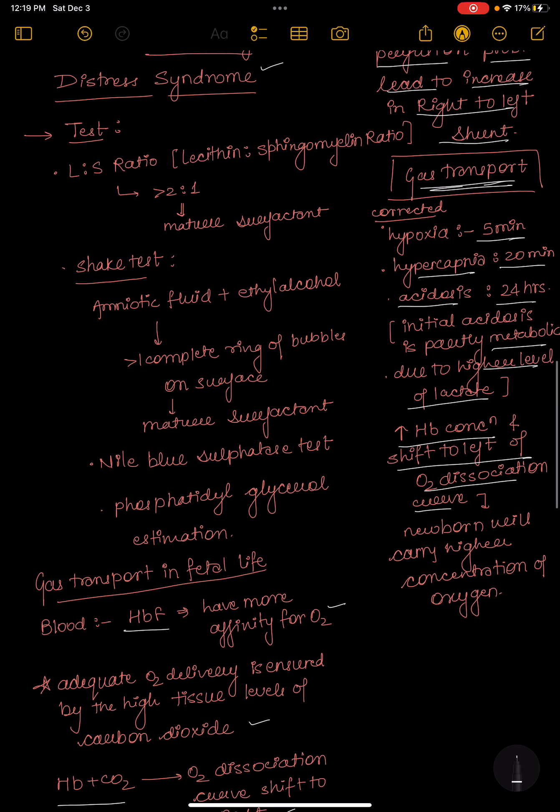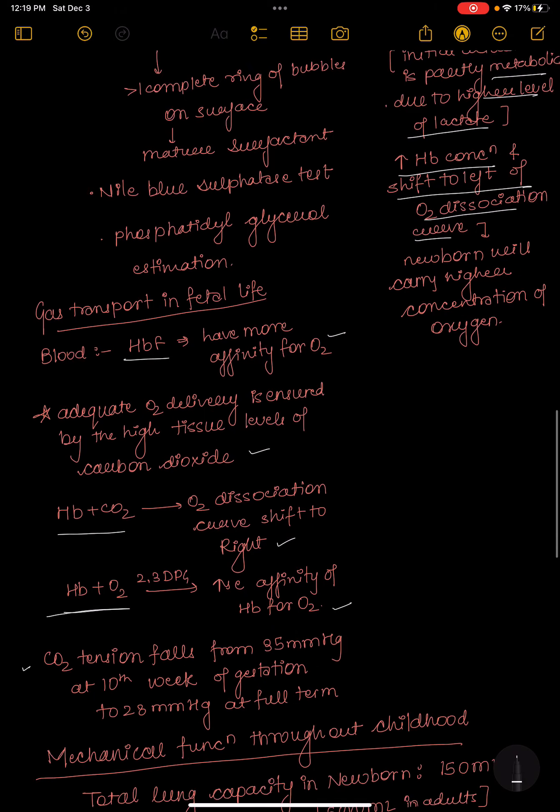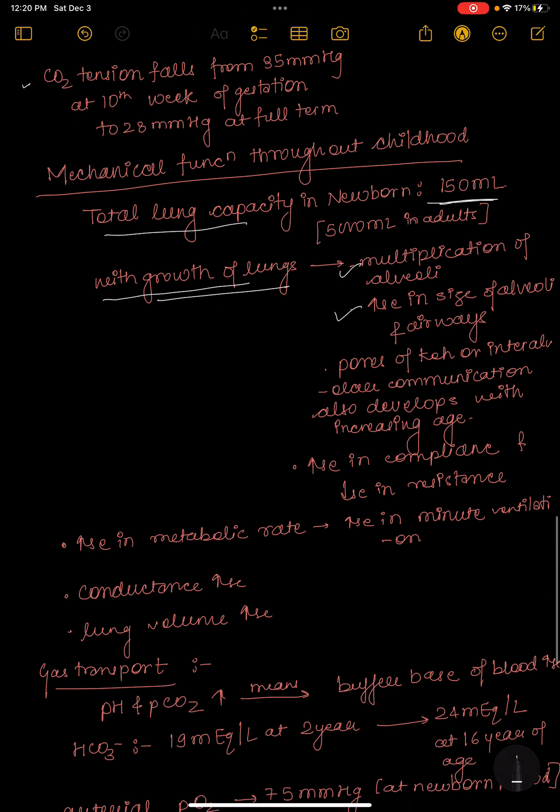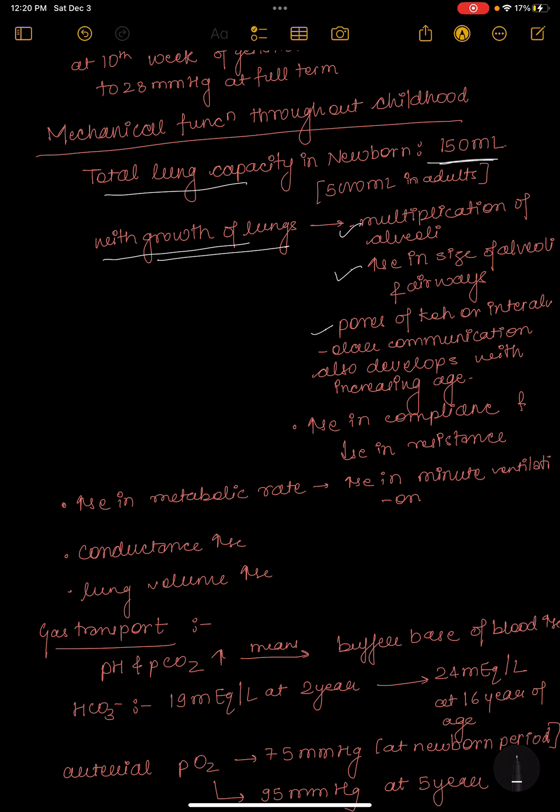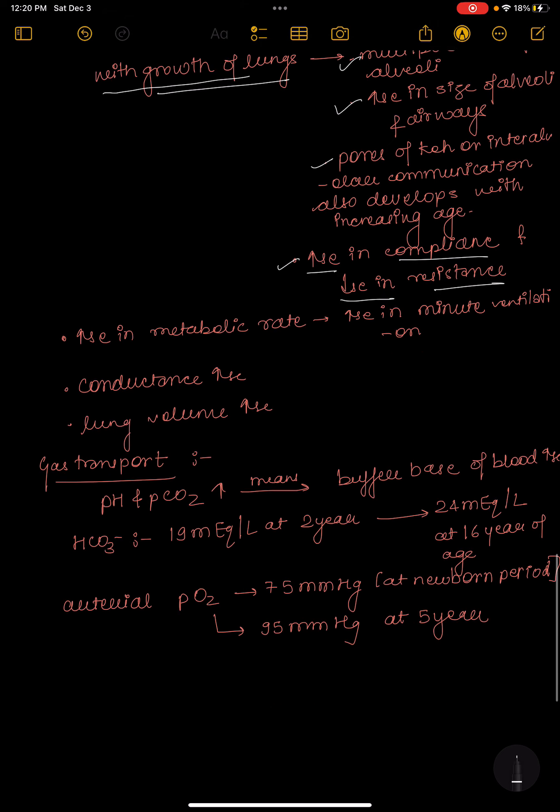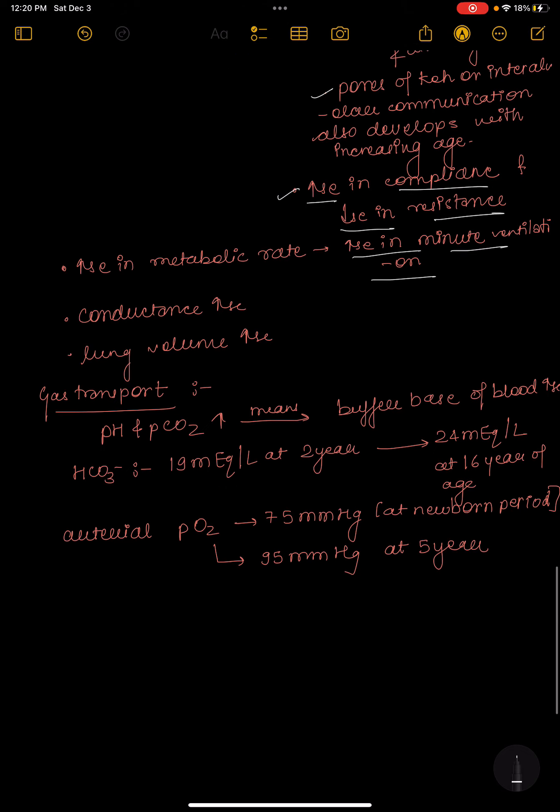Mechanical function throughout childhood: total lung capacity in newborn is 150 ml. As age increases, there is growth of lungs, multiplication of alveoli, increase in size of alveoli and airways. Pores of Kohn or inter-alveolar communication also develops with increasing age. There is increase in compliance and decrease in resistance. Increase in metabolic rate increases minute ventilation. Conductance increases in airways. Lung volumes are increased with increasing age.